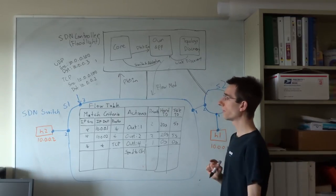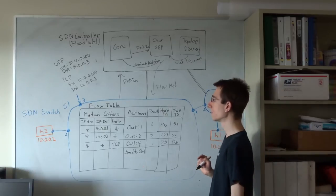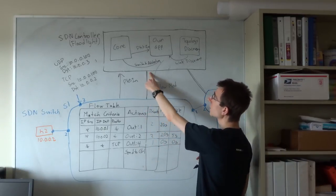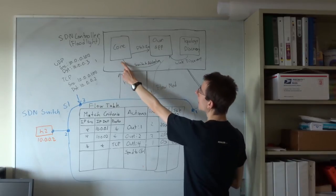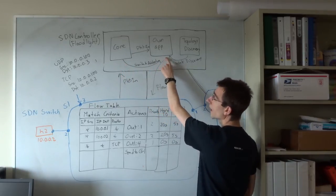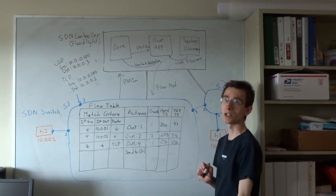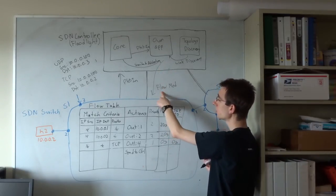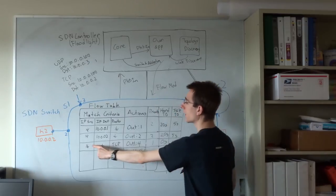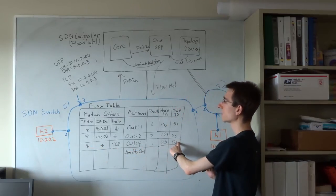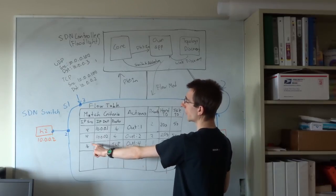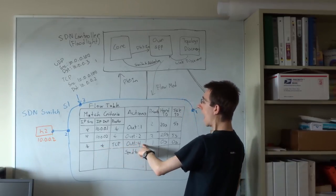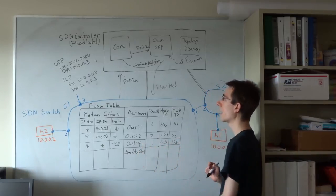Let's go through the full steps as a review. First, when a switch first starts, it establishes a connection with the SDN controller, and the core module in Floodlight generates a switch added event and passes that along to any applications that are interested. Applications may respond by issuing a flow mod command to a switch that installs a particular entry specifying match criteria over Ethernet, IP, or TCP and UDP header fields, actions, priority, and a hard and idle timeout.